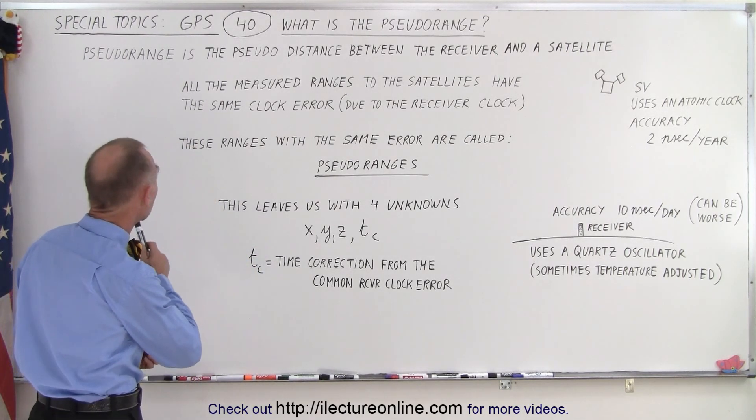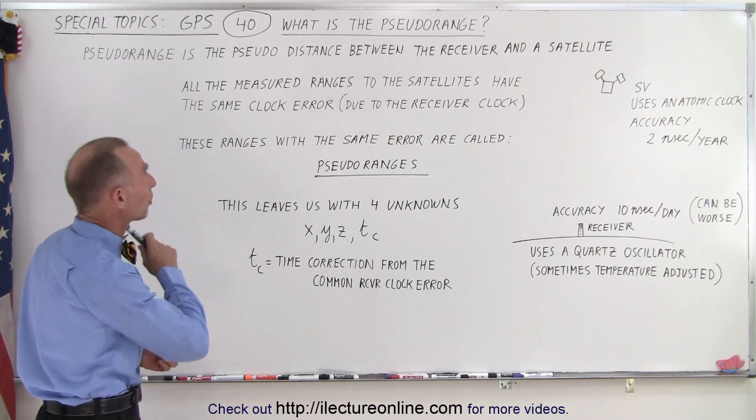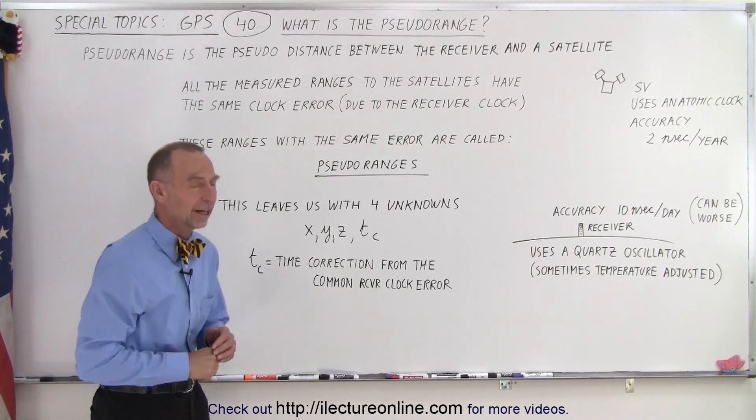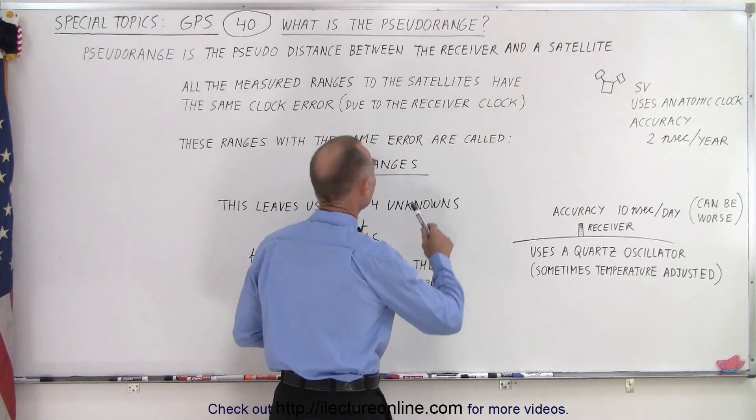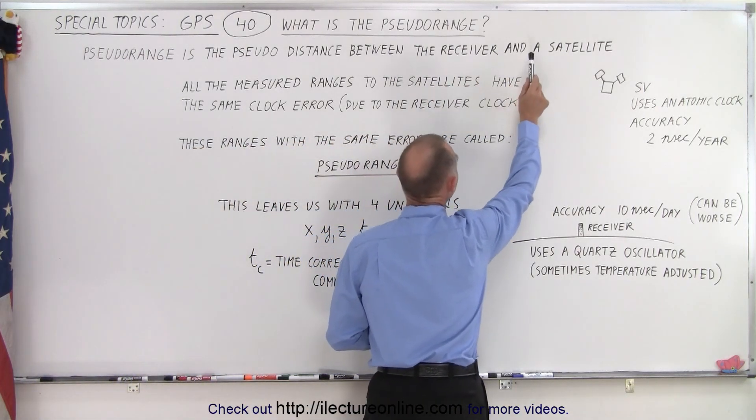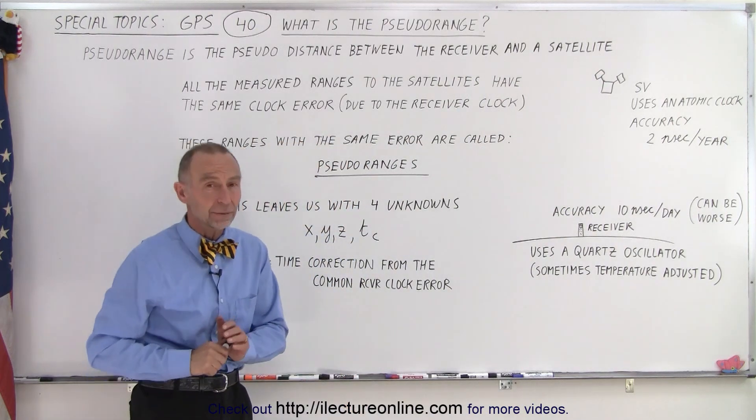The pseudo range is the pseudo distance between the receiver and a satellite. There's an important distinction here - it is the receiver and a satellite because there's a lot of satellites up there.